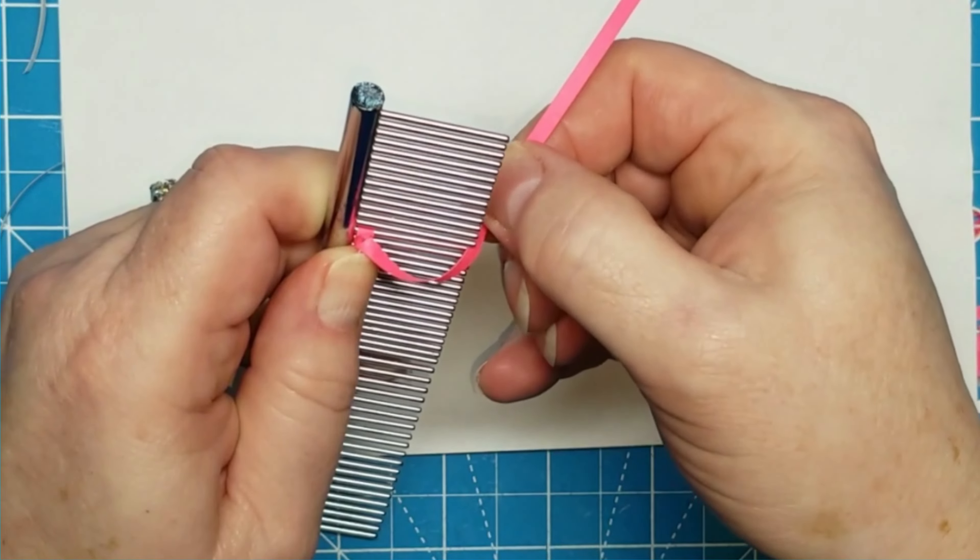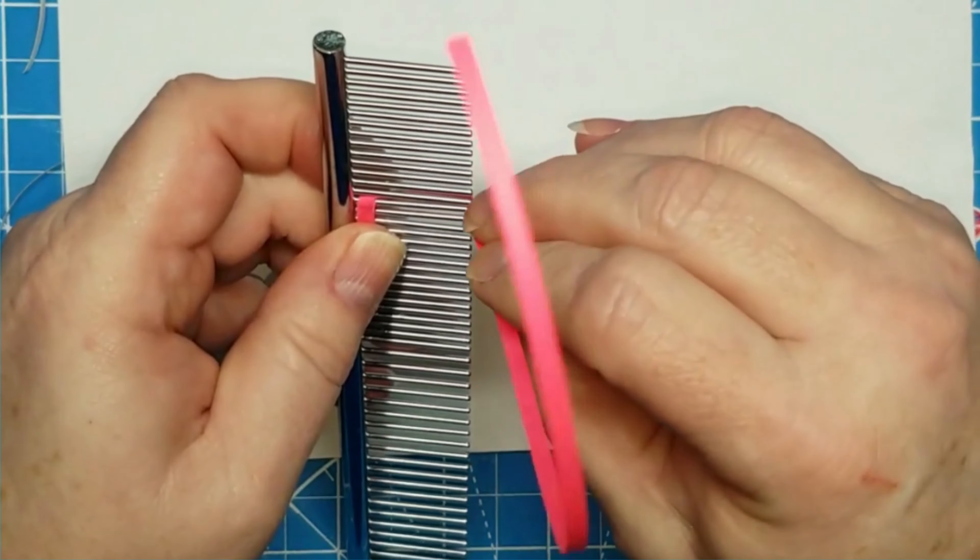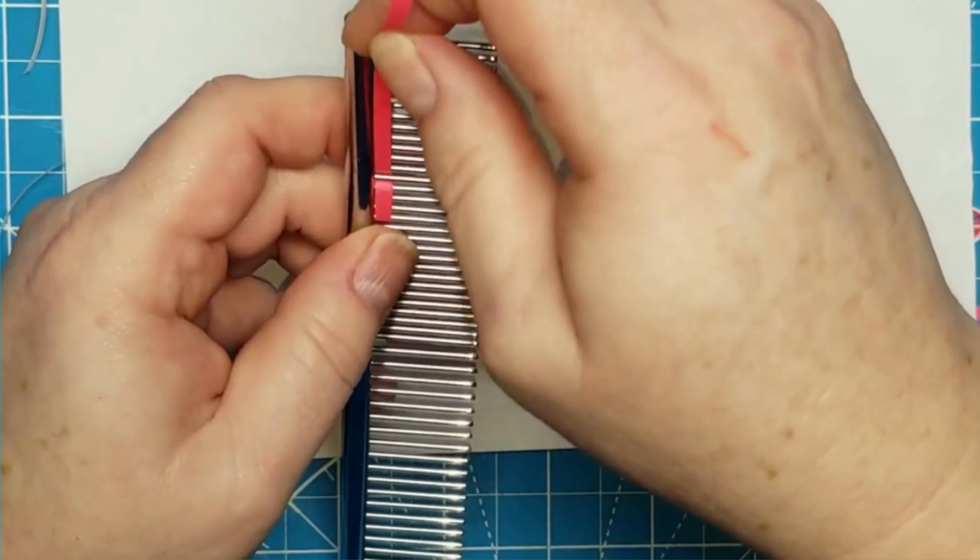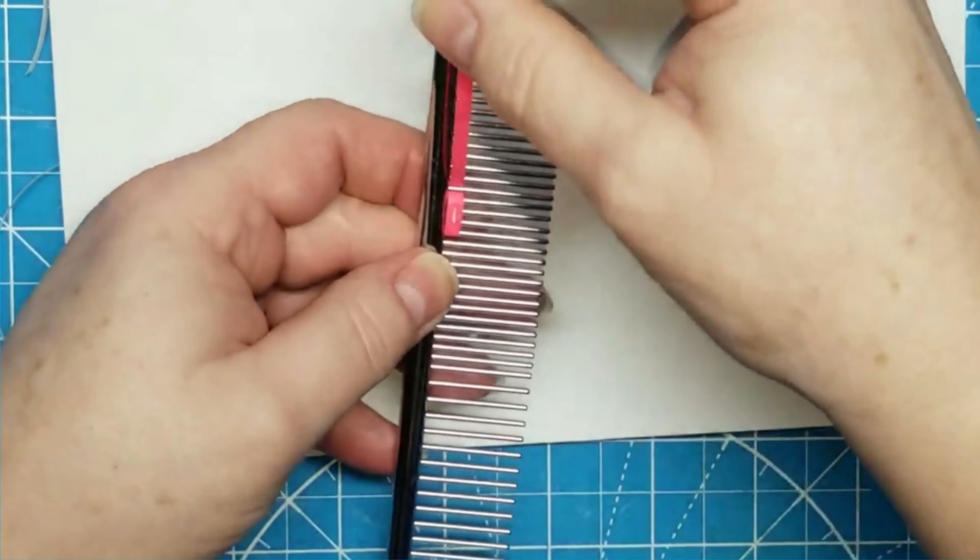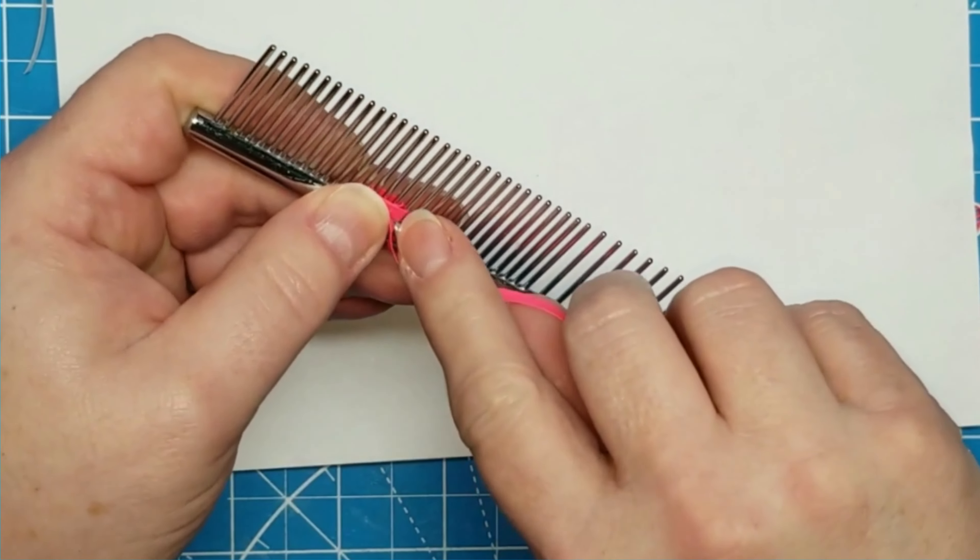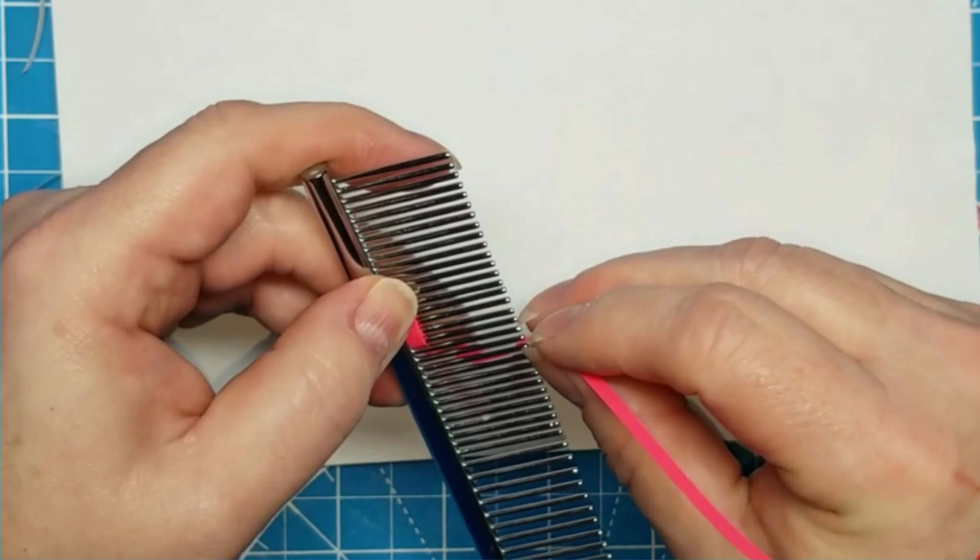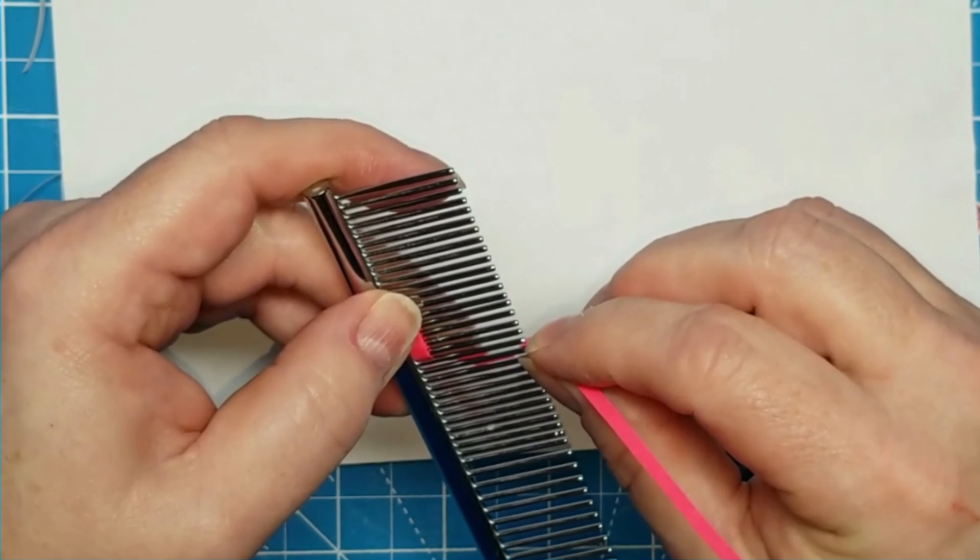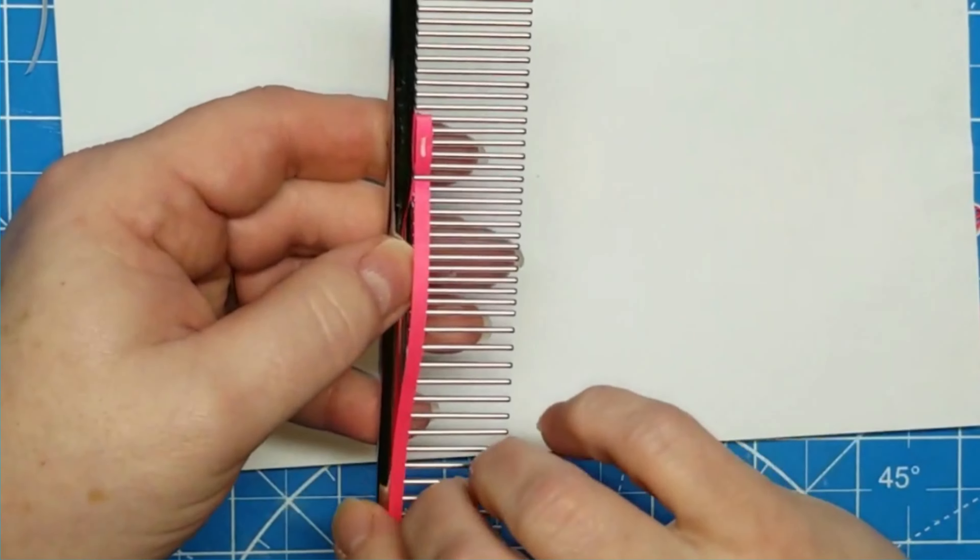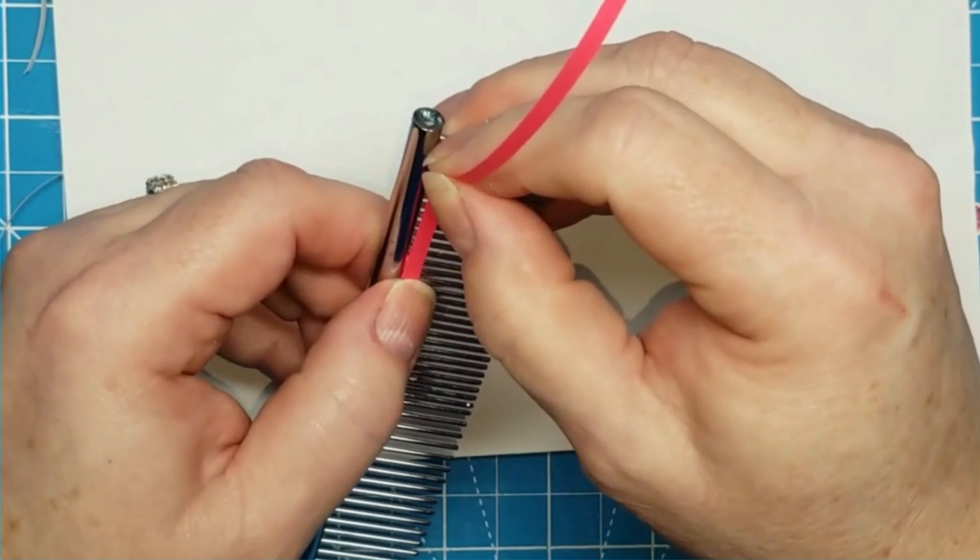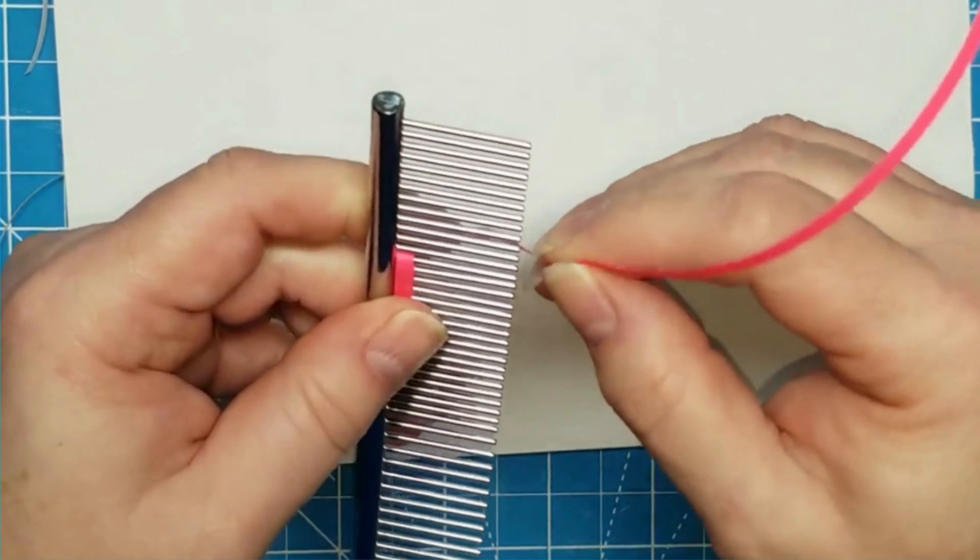Again, you're going to come up right next to this loop here, in between those two teeth, right next to that other loop, and then you're going to go around your tine. Come back over and down. Before we go down, we're going to add a little bit of glue. We're going to go right up next to the teeth that has the paper strip around it, and then come back up around that tooth.